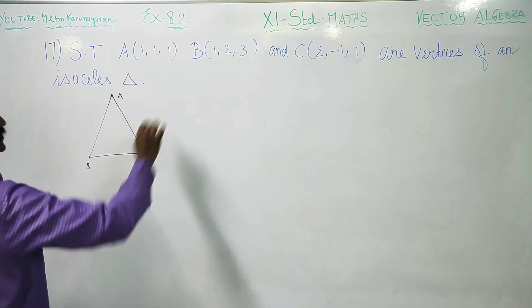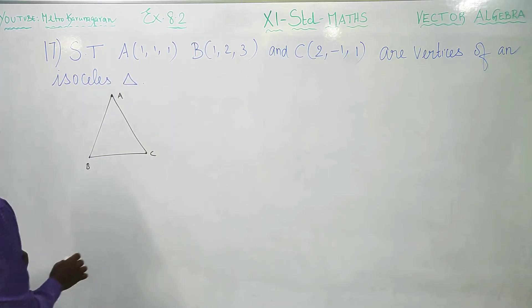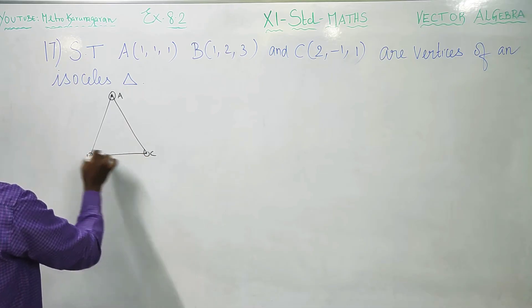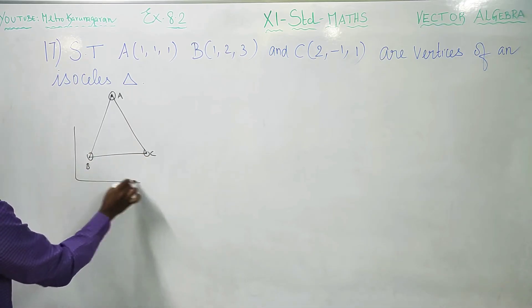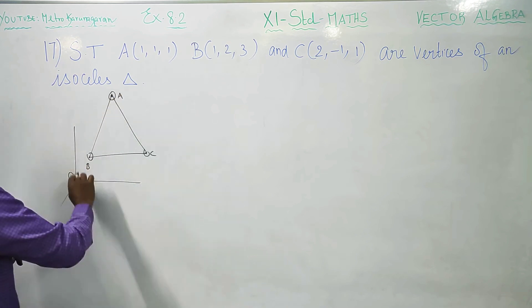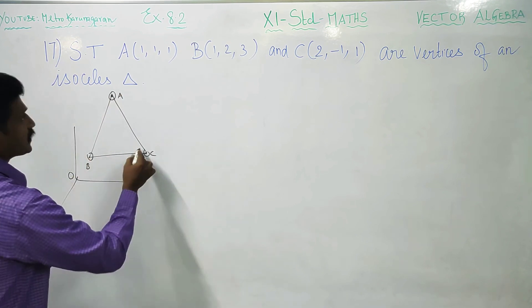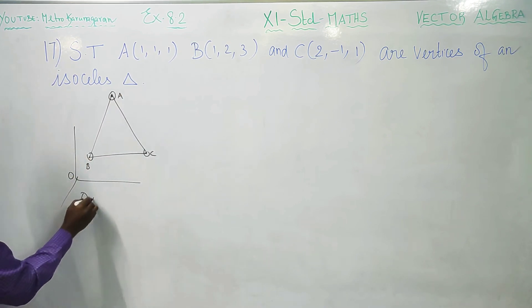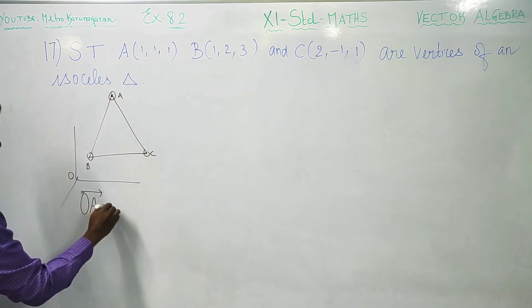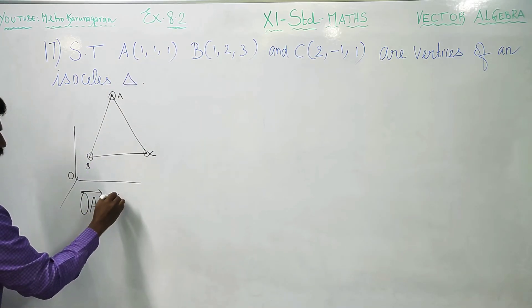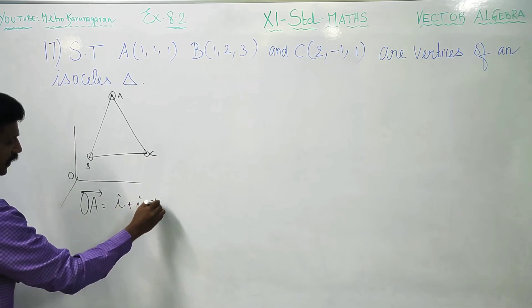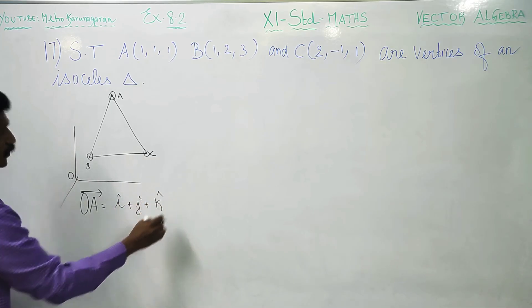We are given the position vectors of these points. This is the location of each point with reference to the origin, with x-axis, y-axis, and z-axis as reference. We write OA vector, which is equal to 1i + 1j + 1k. This is our OA vector.